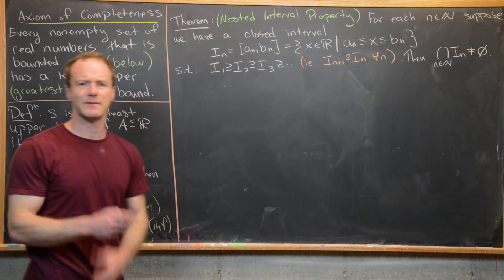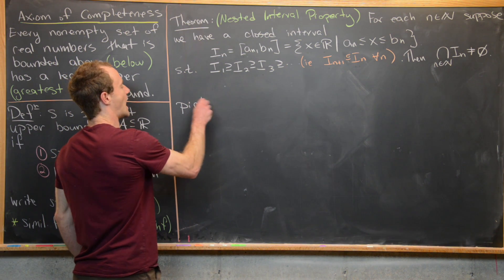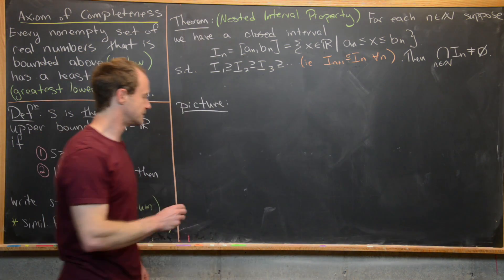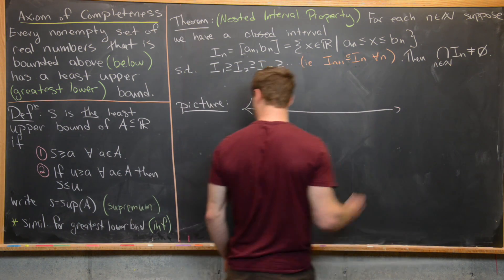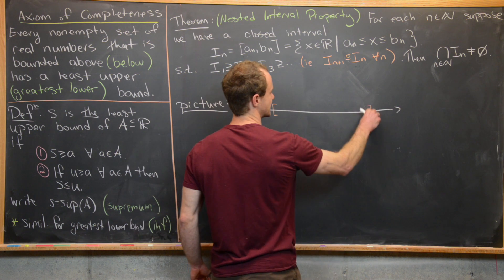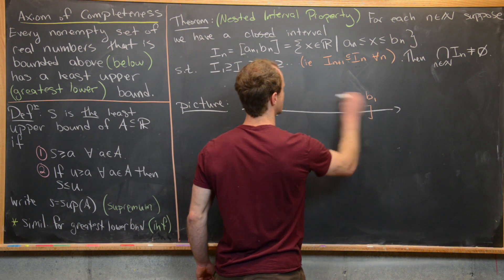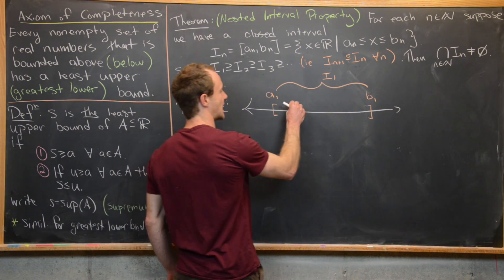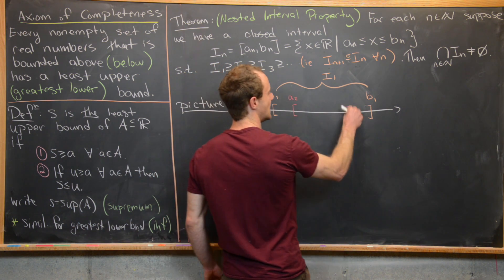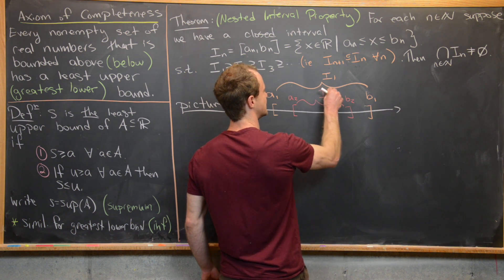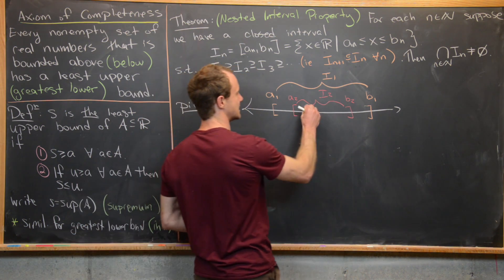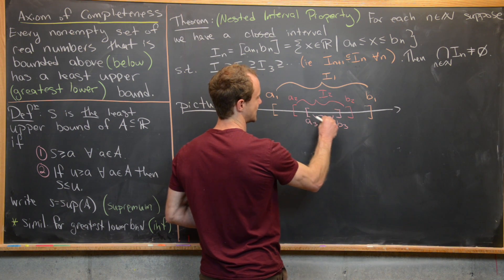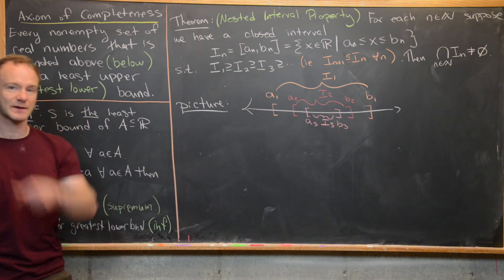Before the proof, let's look at a picture. On our real line, I_N is the largest closed interval, so maybe A₁ and B₁ are on the outside. Within I₁ is I₂ with endpoints A₂ and B₂. Then within I₂ is I₃ with A₃ and B₃, and so on — nesting them tighter and tighter.